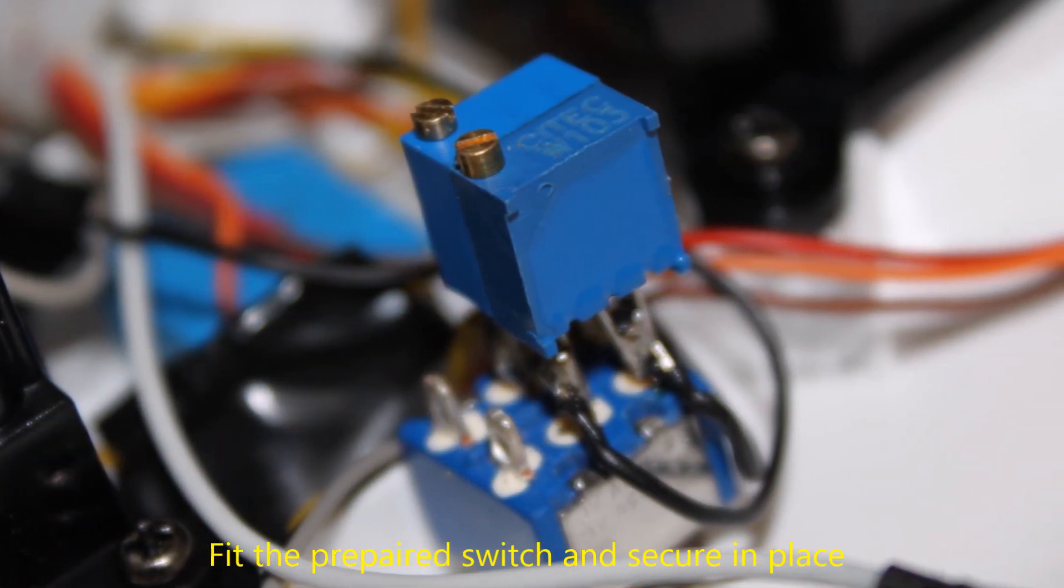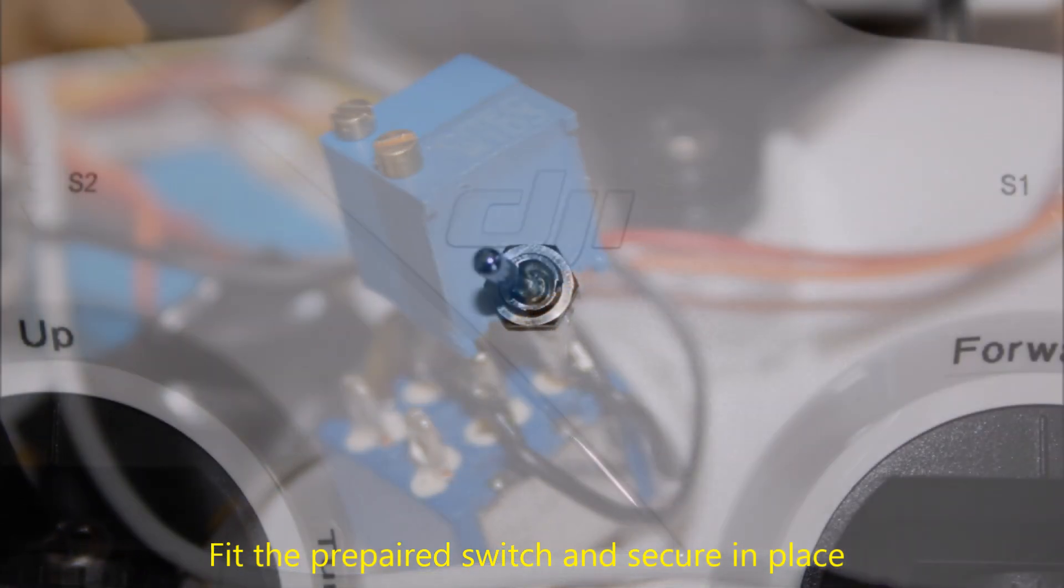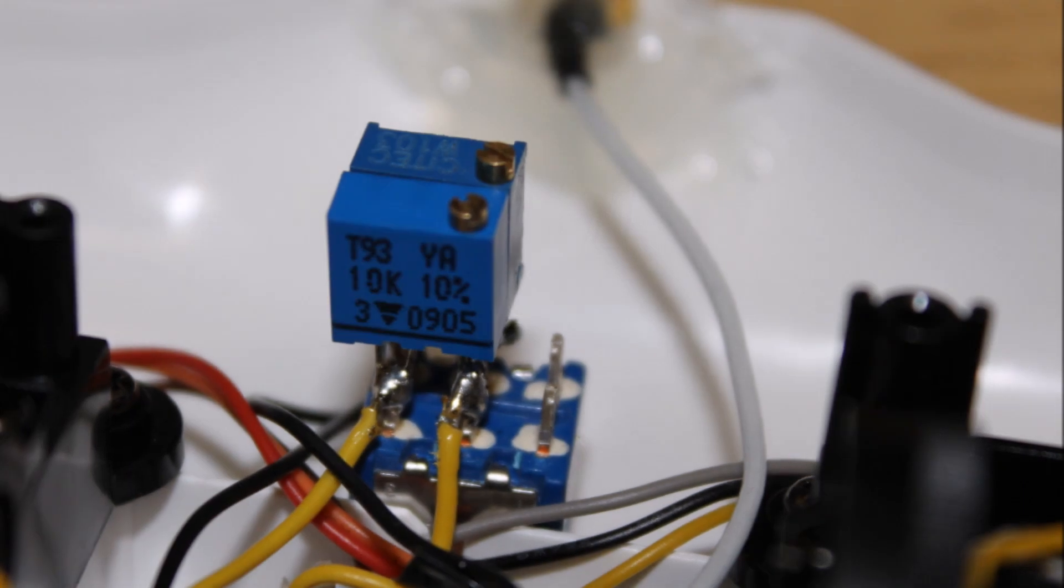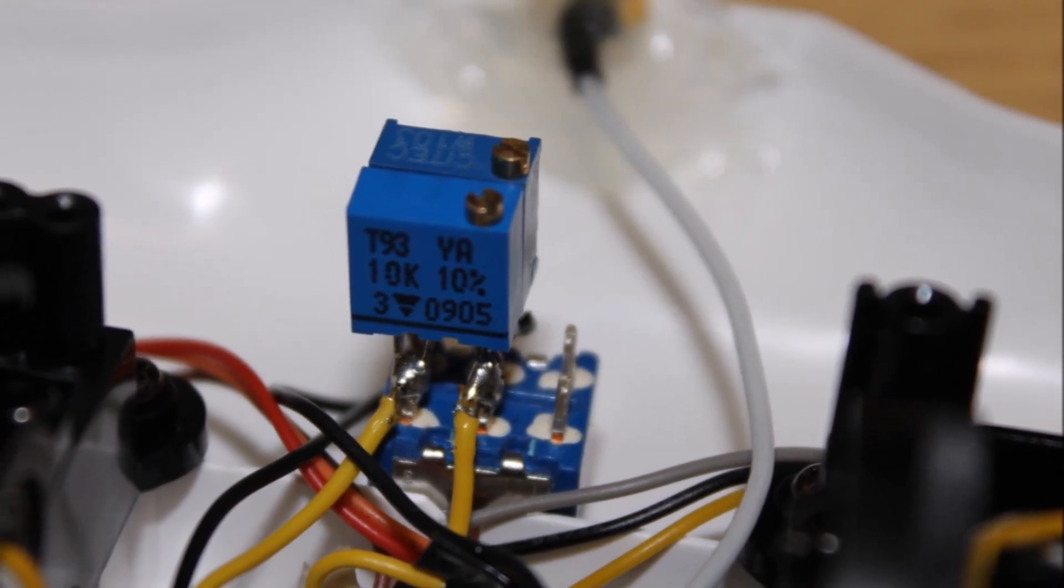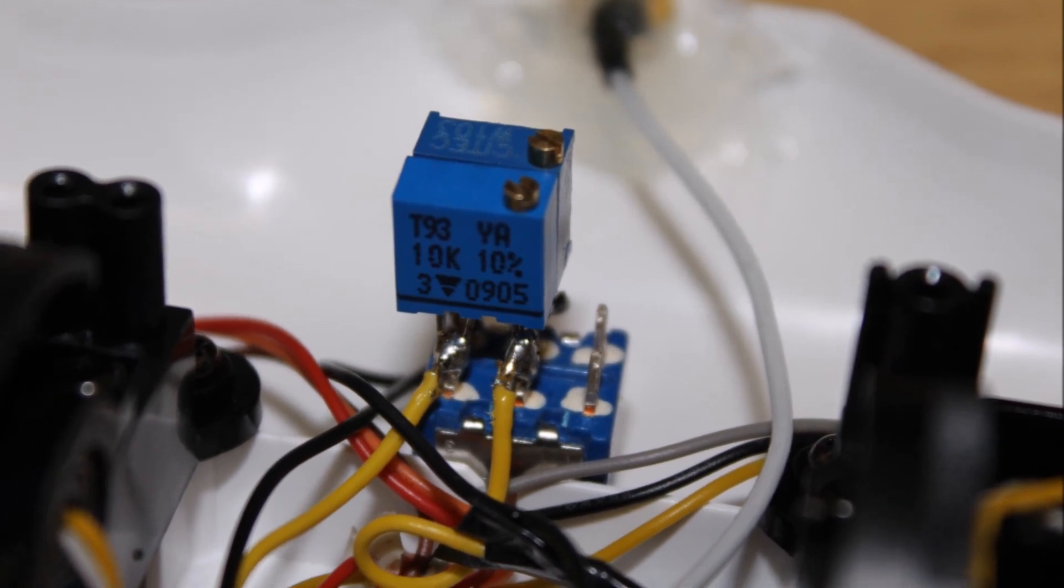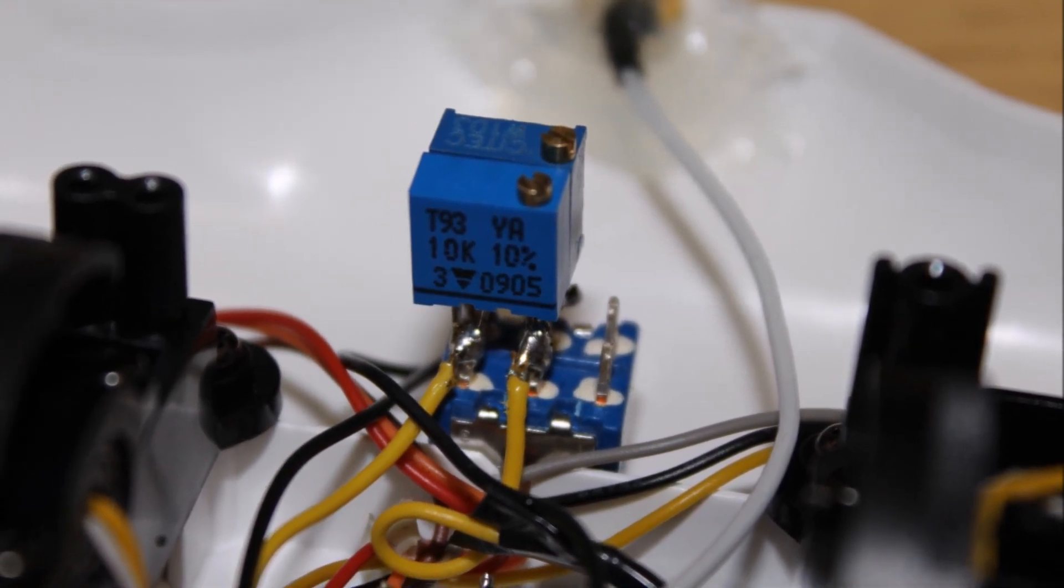It's now time to fit your prepared switch and secure it in place in the hole that you drilled earlier. The wires from the switch will need to be cut to an appropriate length to reach the wires from the joystick.